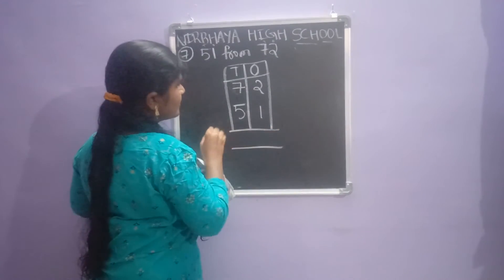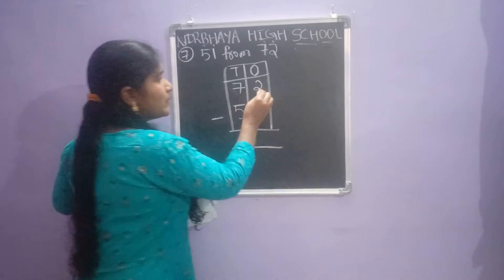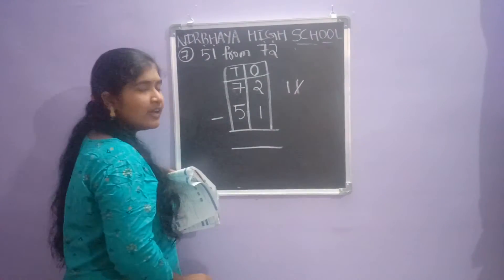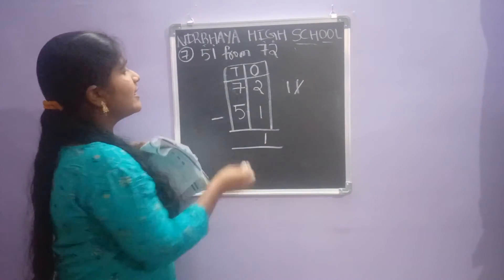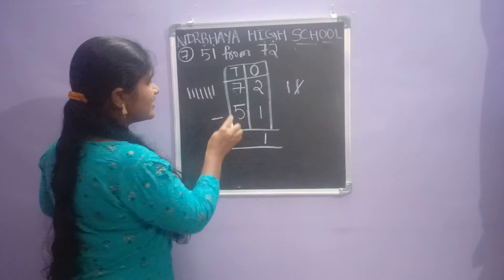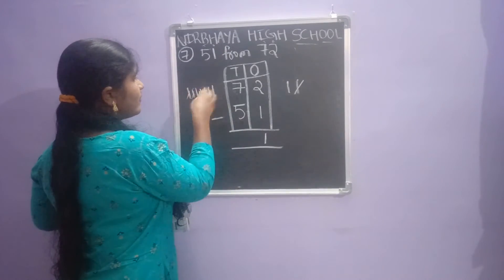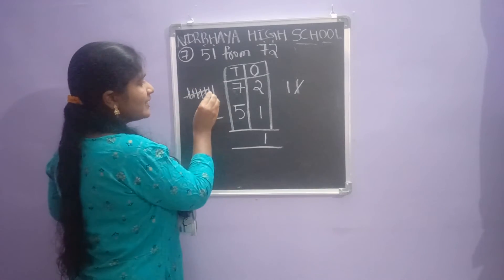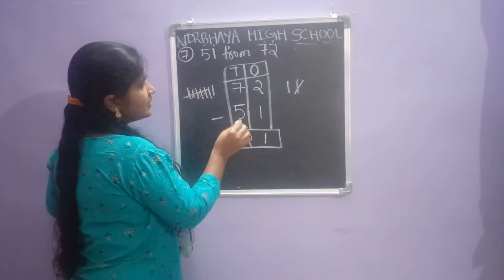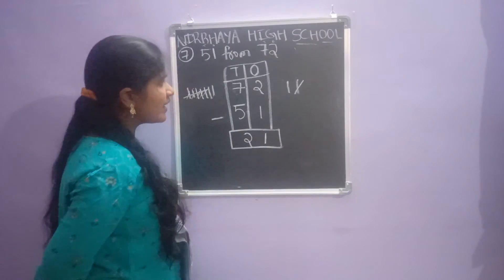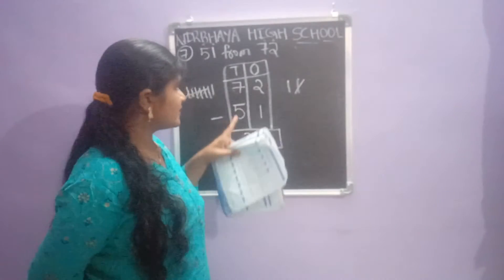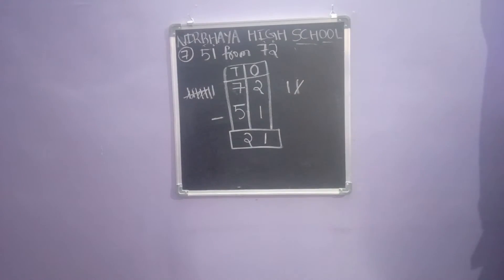Now do the subtraction. Here in ones: draw 2 lines, remove 1 line — 1 line remaining, so enter 1. In tens: draw 7 lines and remove 5 lines. After removing 5 lines, 2 lines are remaining. So seventy-two minus fifty-one equals twenty-one. This is the vertical column method.